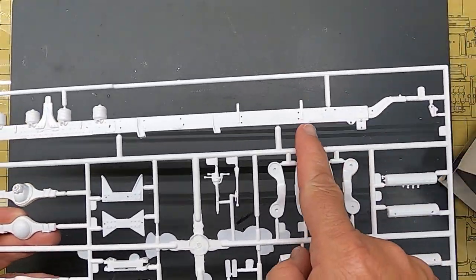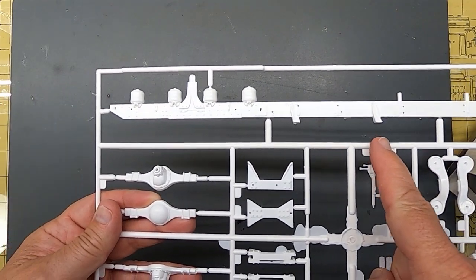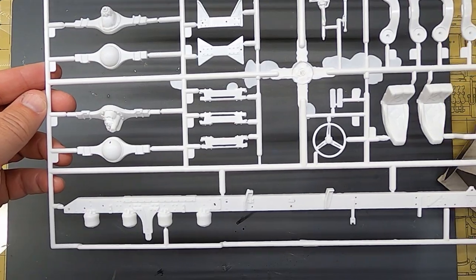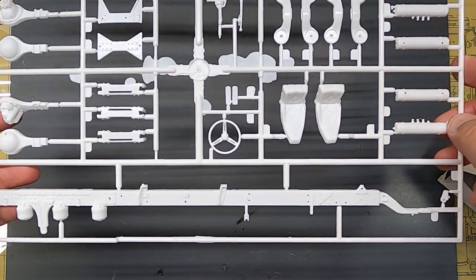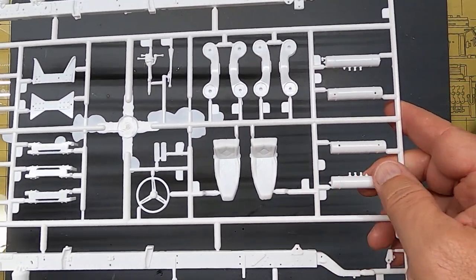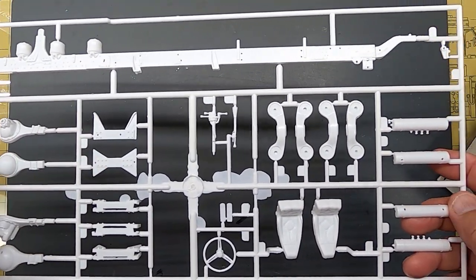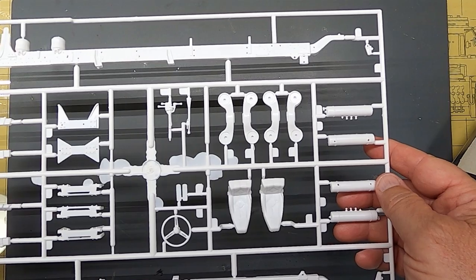Looks like we got our frame rails. Rear ends. Seats. More suspension parts, frame rail parts. Everything looks nice.